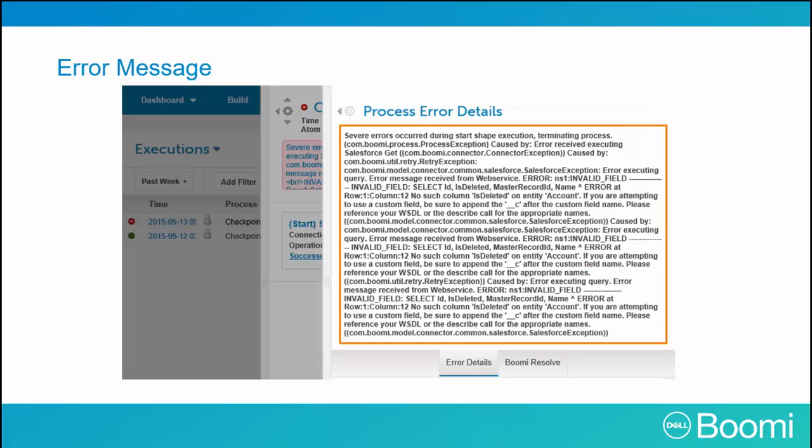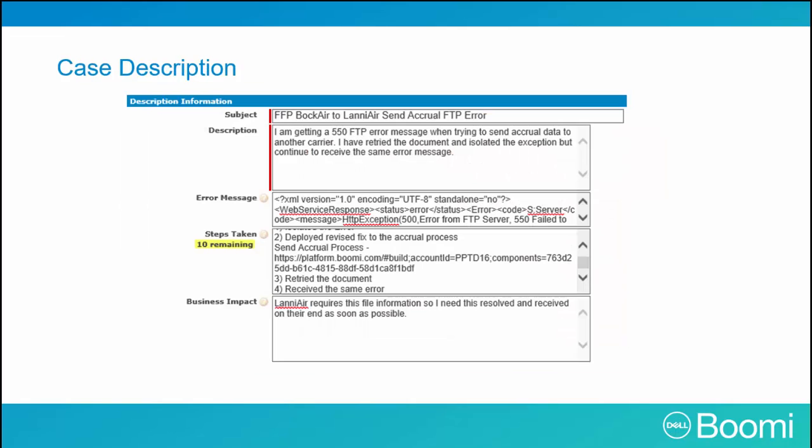Under process reporting, you can view the error message details. Copy and paste the highlighted section into the support case description error message field. This is found under the Manage tab, execution timestamp, error, which is below the process name within the document view. When the error message is pasted in, the next field to complete is the steps taken — list all steps taken to try to resolve the issue. Be as descriptive as possible and include the business effect if the process is not able to execute successfully.